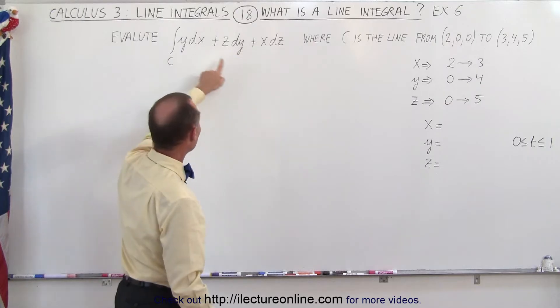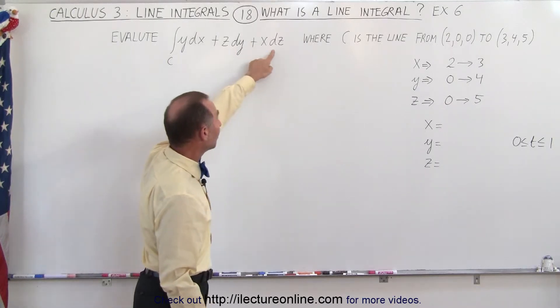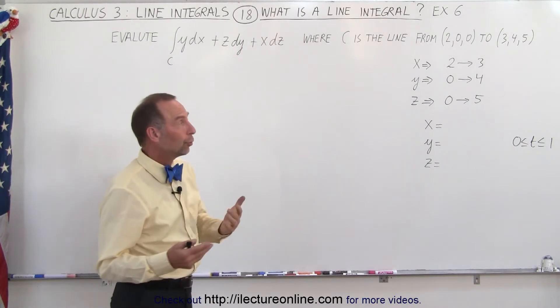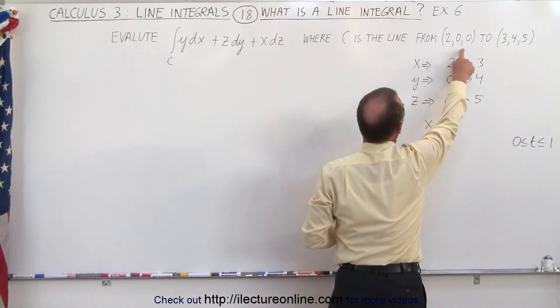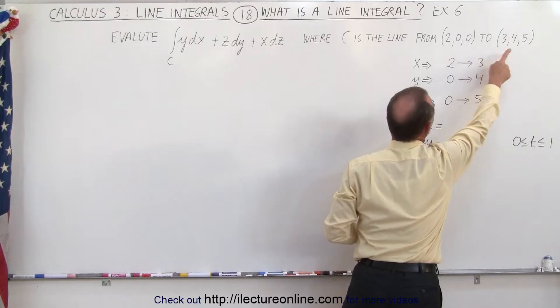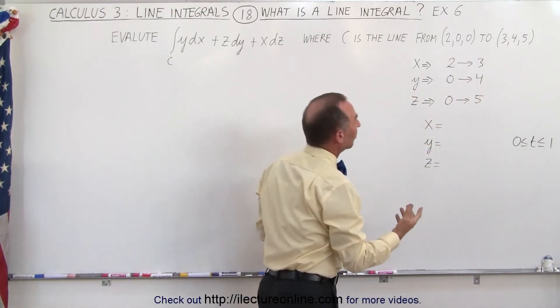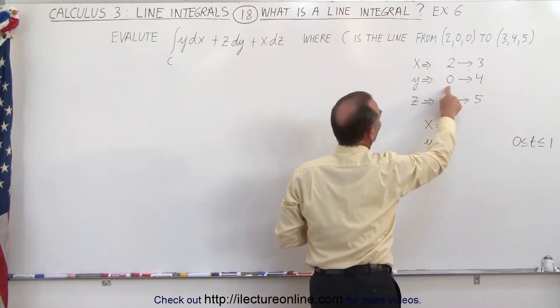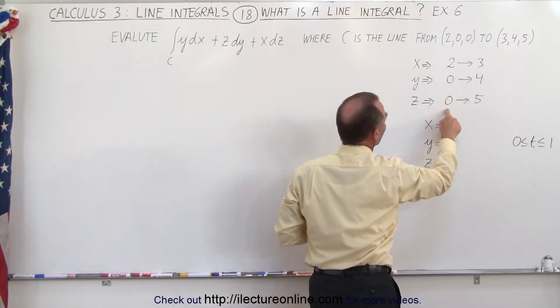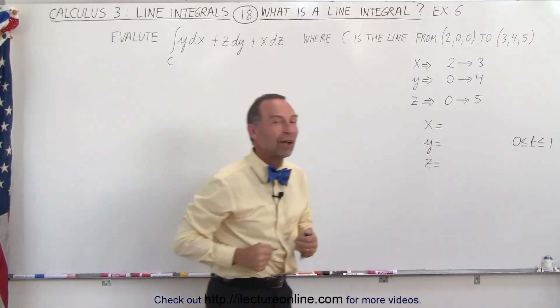y, z, and x, and we have a dx, a dy, and a dz there. The curve in this case is a straight line that starts from the point (2,0,0) and goes to the point (3,4,5). So we realize here that x goes from 2 to 3, y goes from 0 to 4, and z goes from 0 to 5, all in a linear fashion.